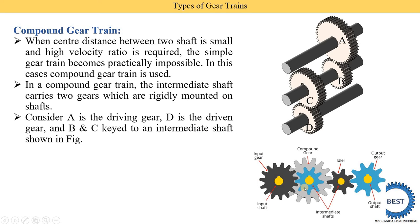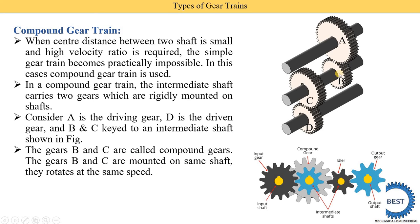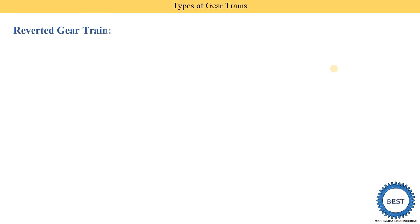Here we see another diagram where two intermediate shafts are present. On one intermediate shaft, two intermediate gears are mounted — that is called the compound gear. On the second intermediate shaft, only one gear is there, which is called the idler gear. The gears B and C are called compound gears. They are mounted on the same shaft and rotate at the same speed. Even though the size of these two gears is different, being on the same shaft means their speed is the same.